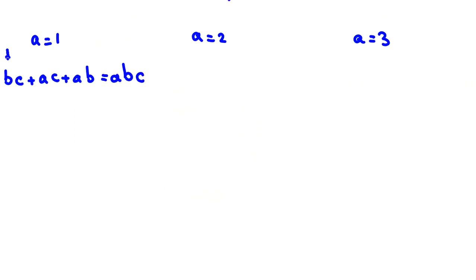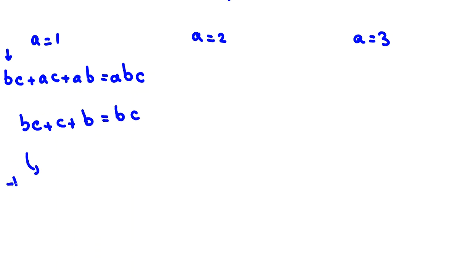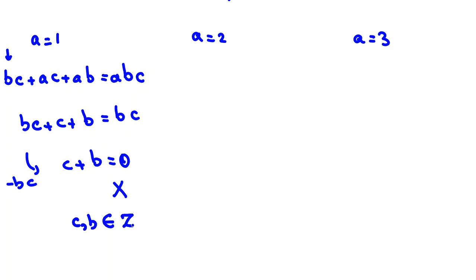Using the main equation BC + AC + AB = ABC. In the first case, A = 1: substituting gives BC + C + B = BC. Subtracting BC from both sides gives C + B = 0, which is not possible since C and B are positive integers.